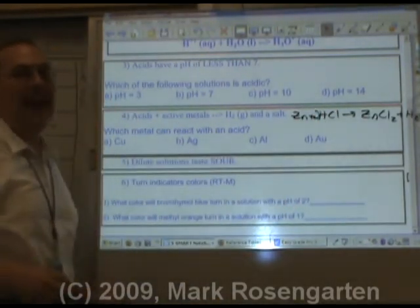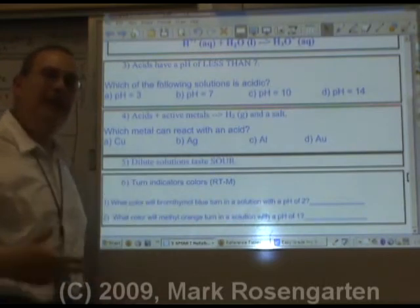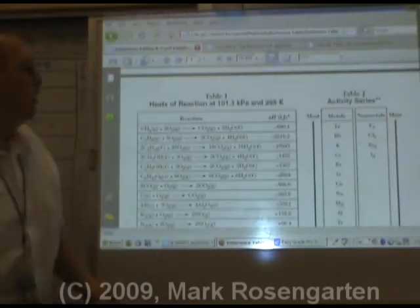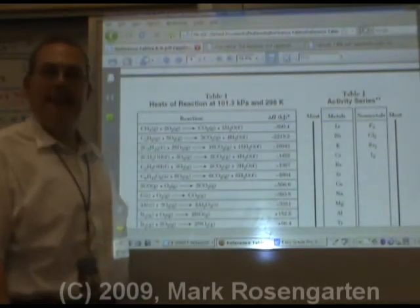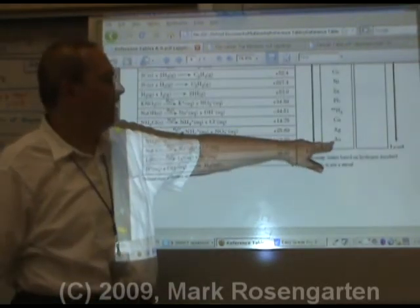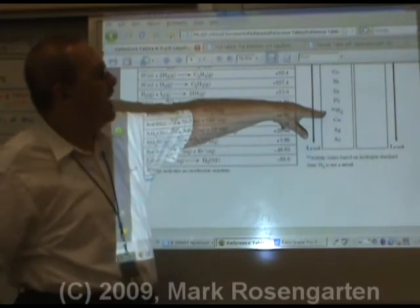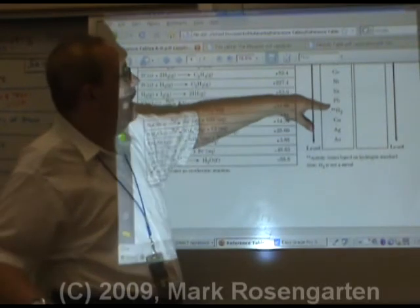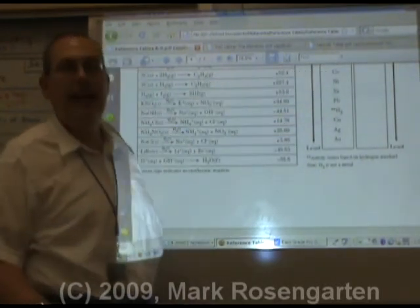How do you know if a metal is active or not? For that, we need reference table J. Reference table J, or the activity series, lists metals from most active to least active. Any metal that's higher than hydrogen is capable of being reacted with an acid.